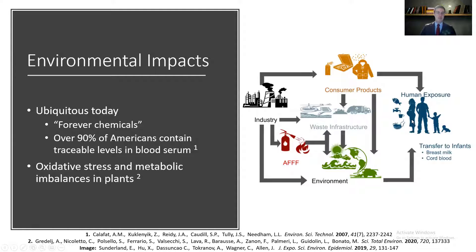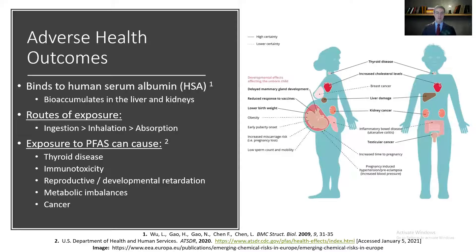It's estimated that over 90% of Americans contain traceable levels of key PFAS in blood serum. In the environment, they're known to cause oxidative stress and metabolic imbalances in plants. They're also known to cause many adverse health outcomes in humans — they tend to bind to human serum albumin and bioaccumulate in the liver and kidneys. On the right, you can see a figure showing various adverse health outcomes. The ones in bold have a strong correlation to PFAS exposure, and the ones not in bold are suspected causes but aren't quite as certain.